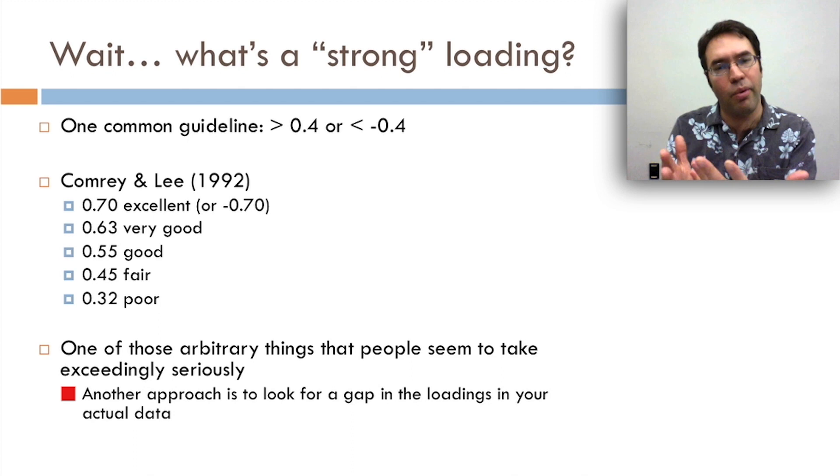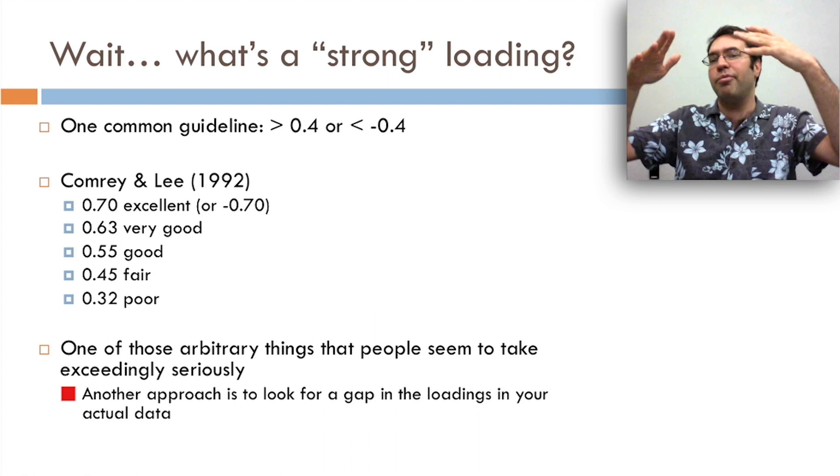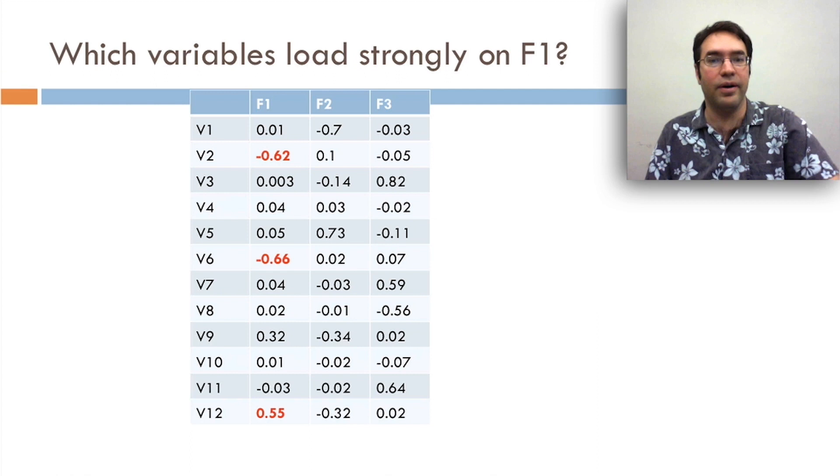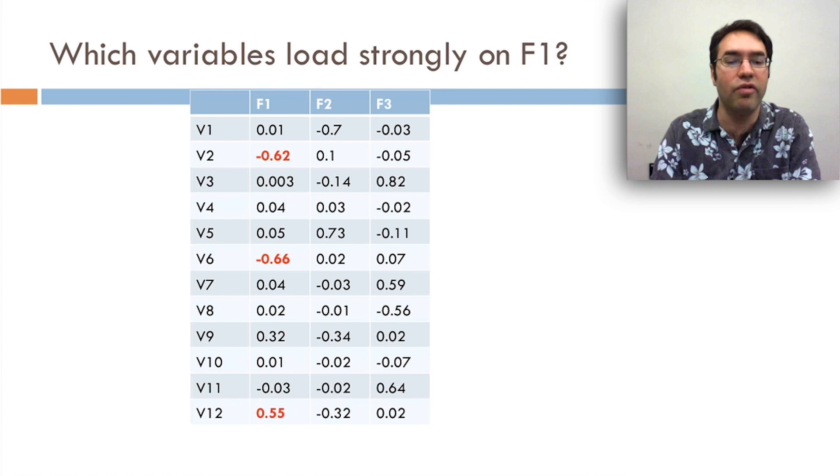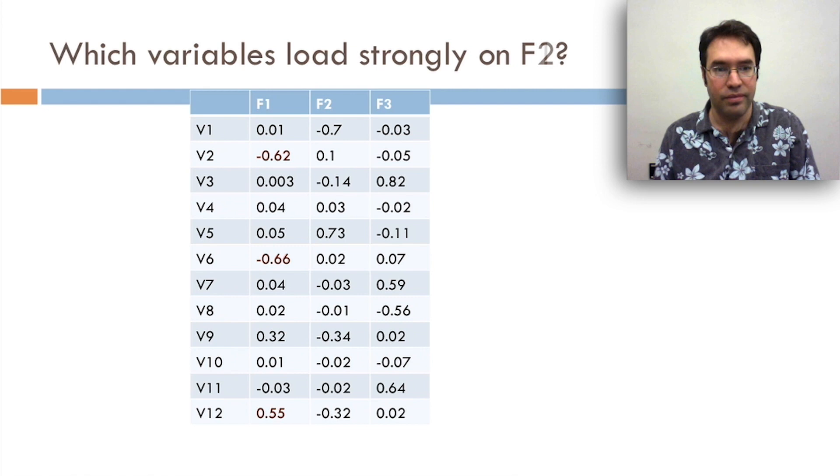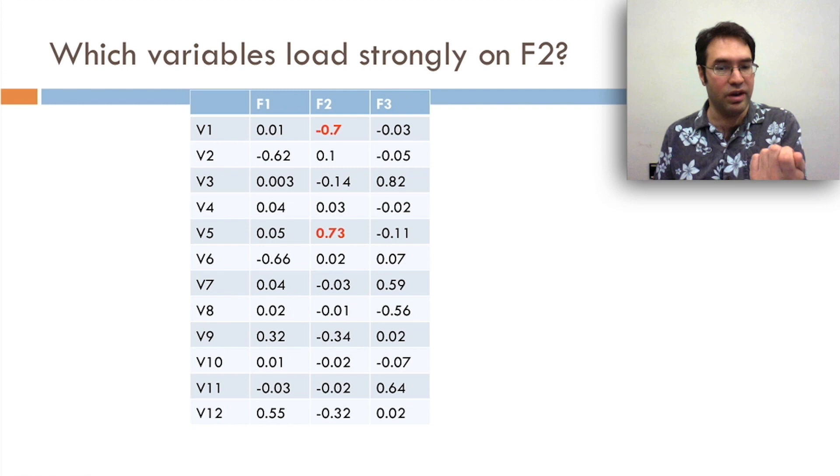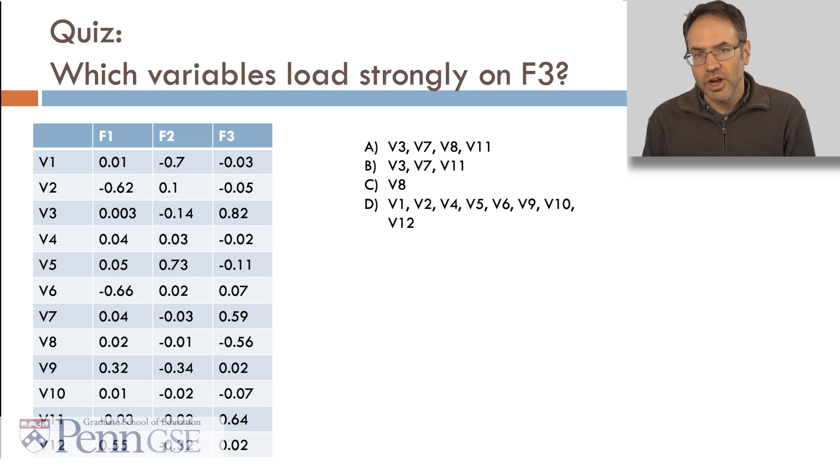So which variables load strongly on F1? Well, you know, regardless of whether you're going to treat 0.4 as a magic number, or look for a big gap, it's going to be the same answer here. V2 is negative 0.62, V6 is negative 0.66, and V12 is 0.55, and there's nothing else all the way down to 0.32. How about F2? Which variables load strongly on that one? Well, in that case, it's V1 and V5, negative 0.7, 0.73, big gap between those, and V9, negative 0.34. So quick quiz. Which variables load strongly on F3?